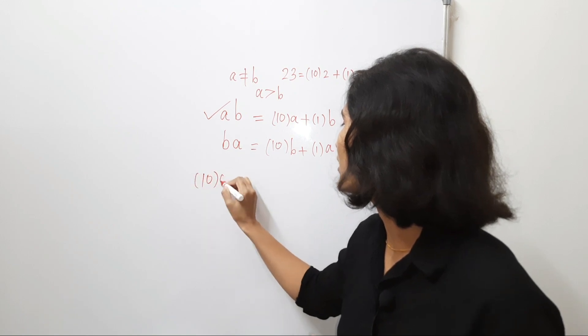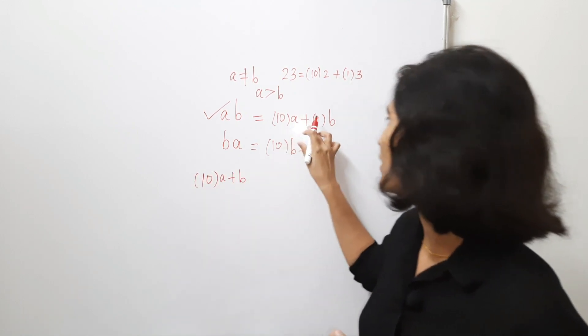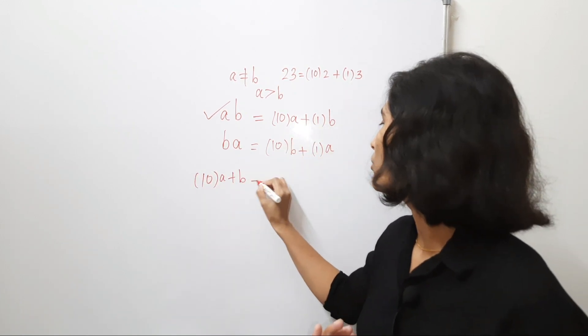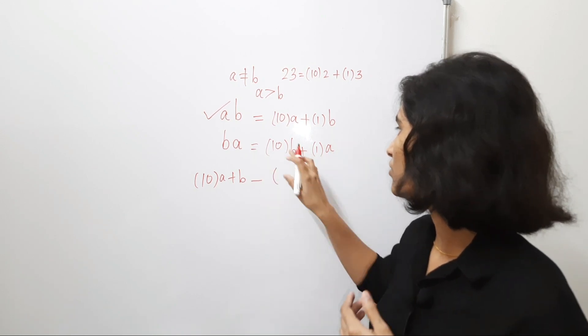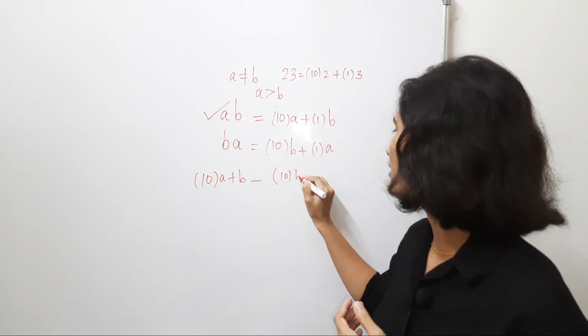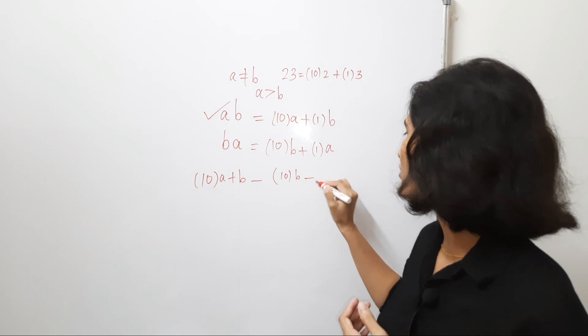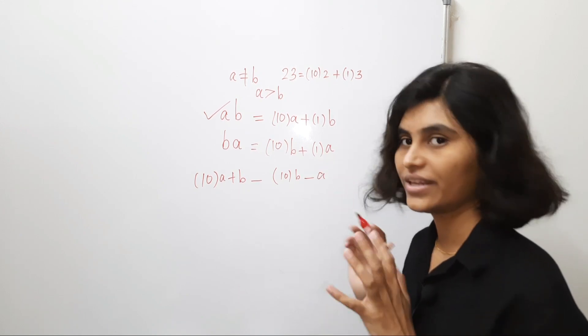So, we have 10 times A plus B, 1 times B is same as B, minus, we are taking the difference. So, it is 10 times B and this becomes minus 1 times A which is A.